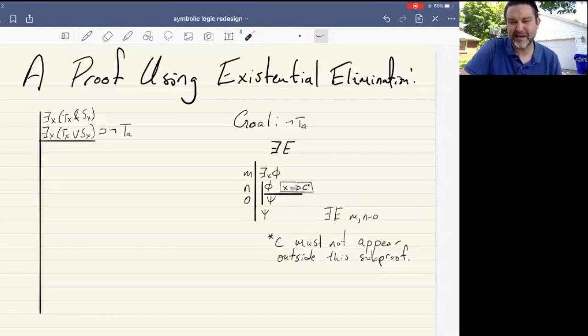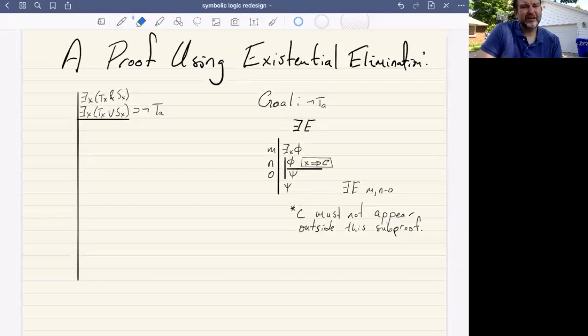Additionally, C must not appear outside of the subproof because C was just this name we made up to talk about whatever object satisfies the property attributed to some X or other. Now again, at this instance, when we apply this rule, we will cite existential elimination. We'll cite the existential statement and the subproof that led to our conclusion psi, which does not contain C.